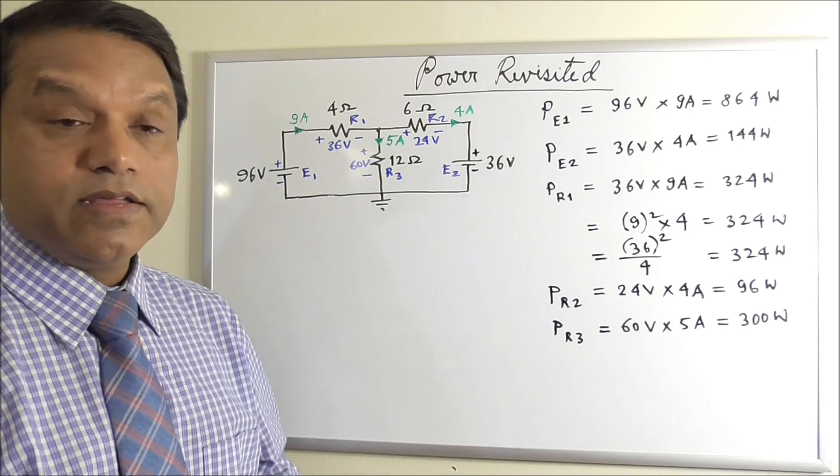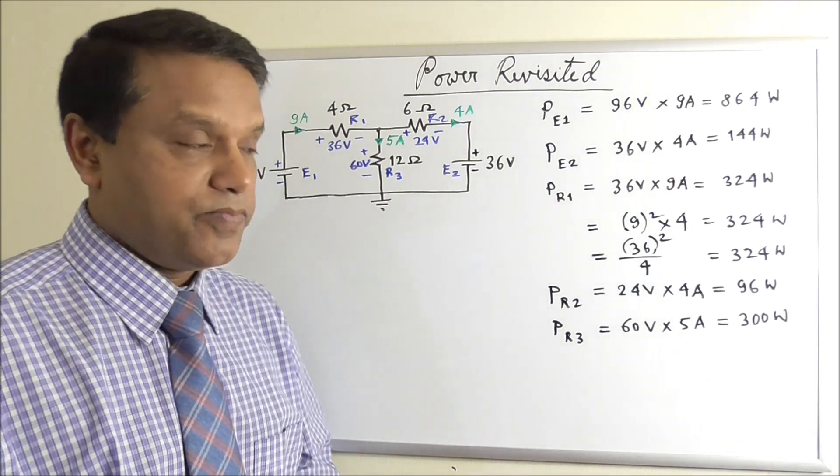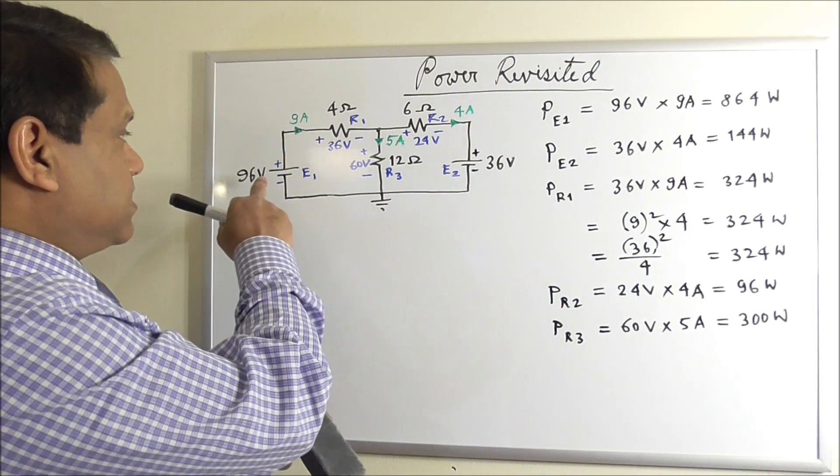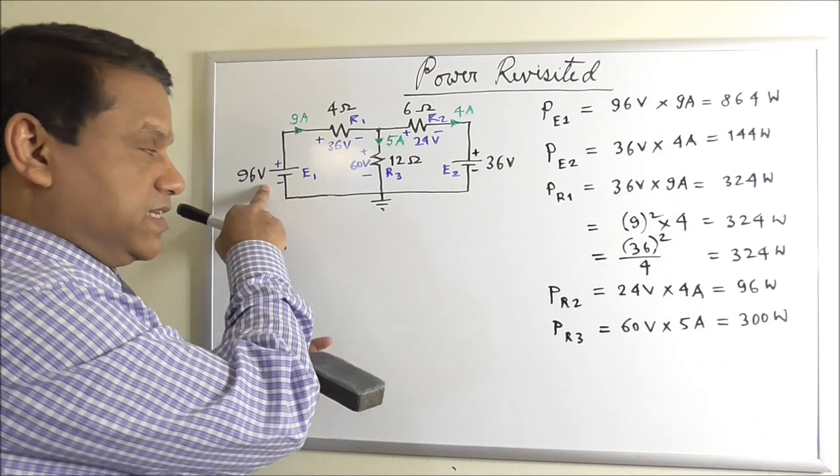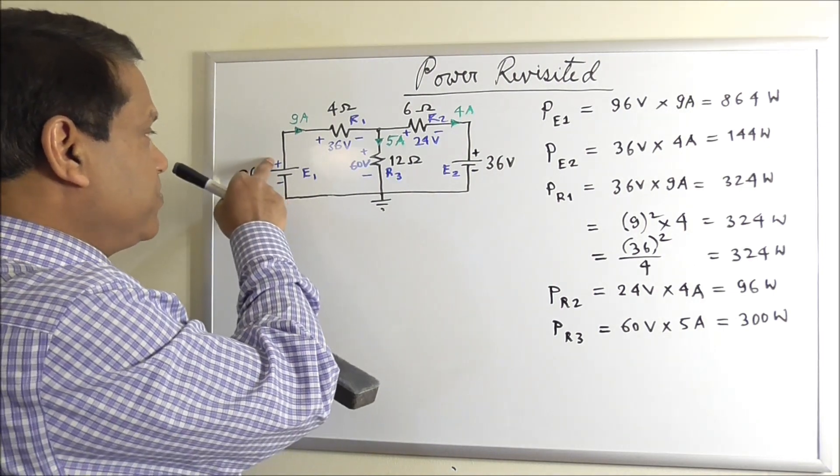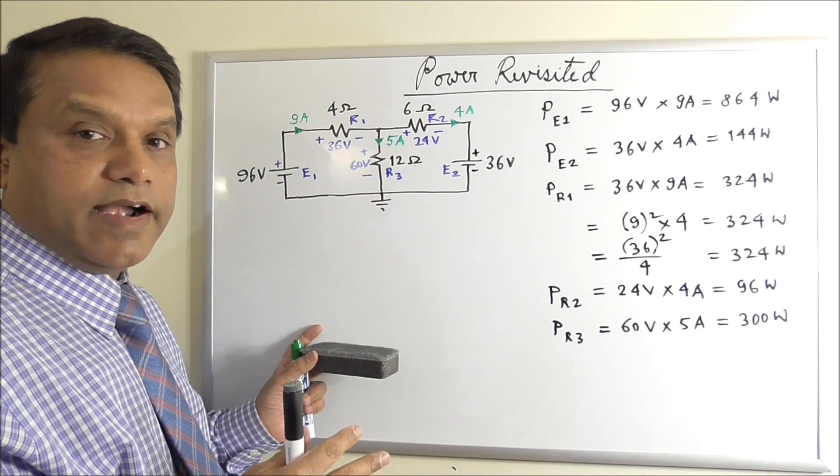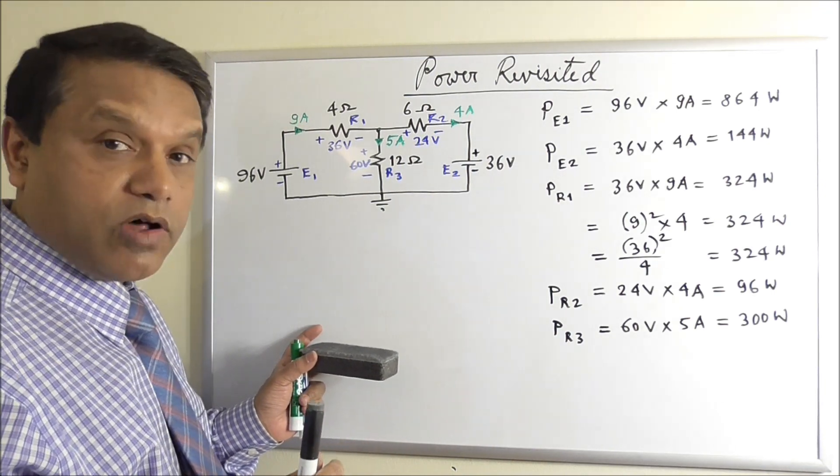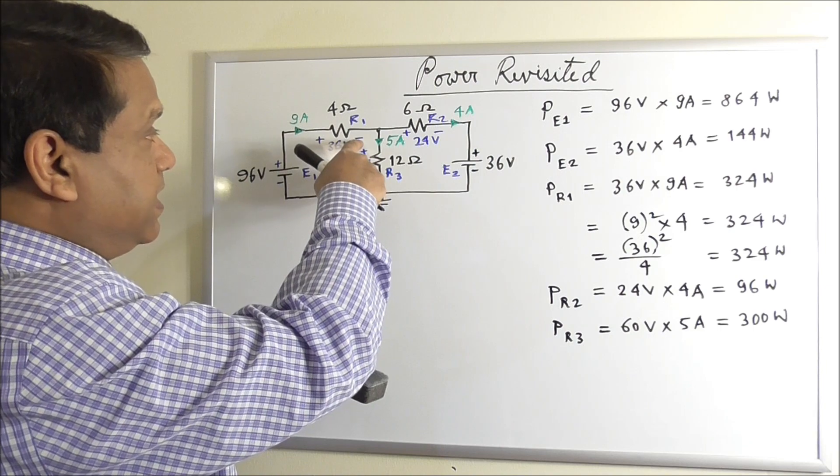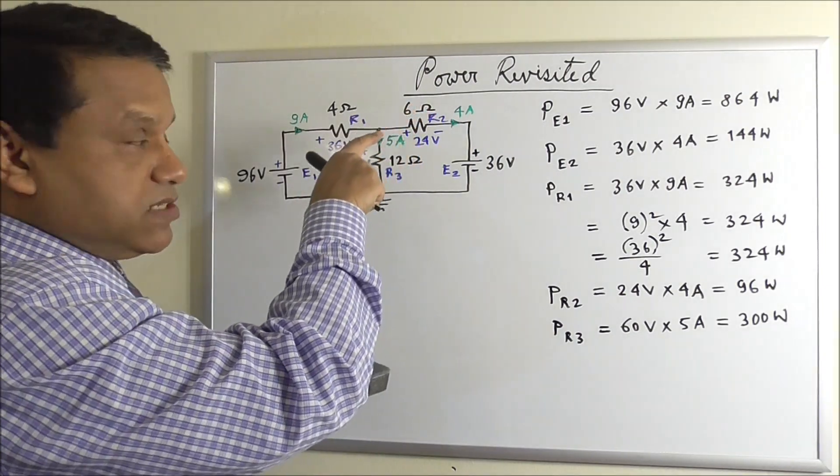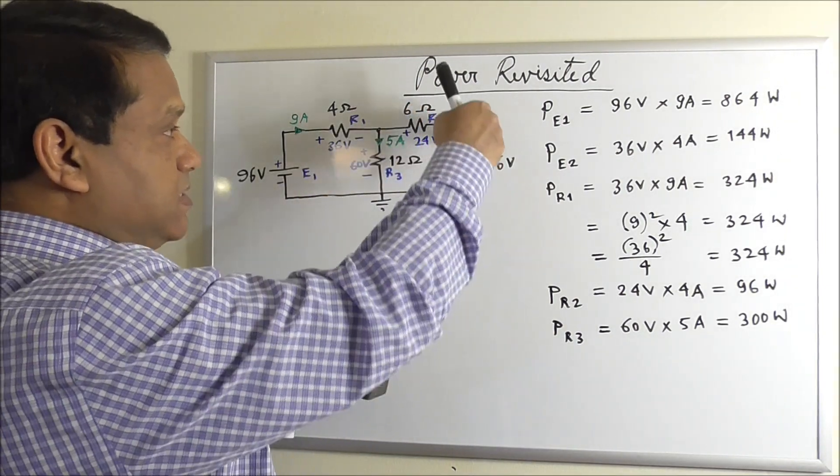Now let's look at the power supply and consumption. Only this element is supplying power in this case, because current is coming out of the higher voltage side. For all others, current is actually coming out of the lower voltage side. You see here, the negative side current is coming out. And here, same here, same here.